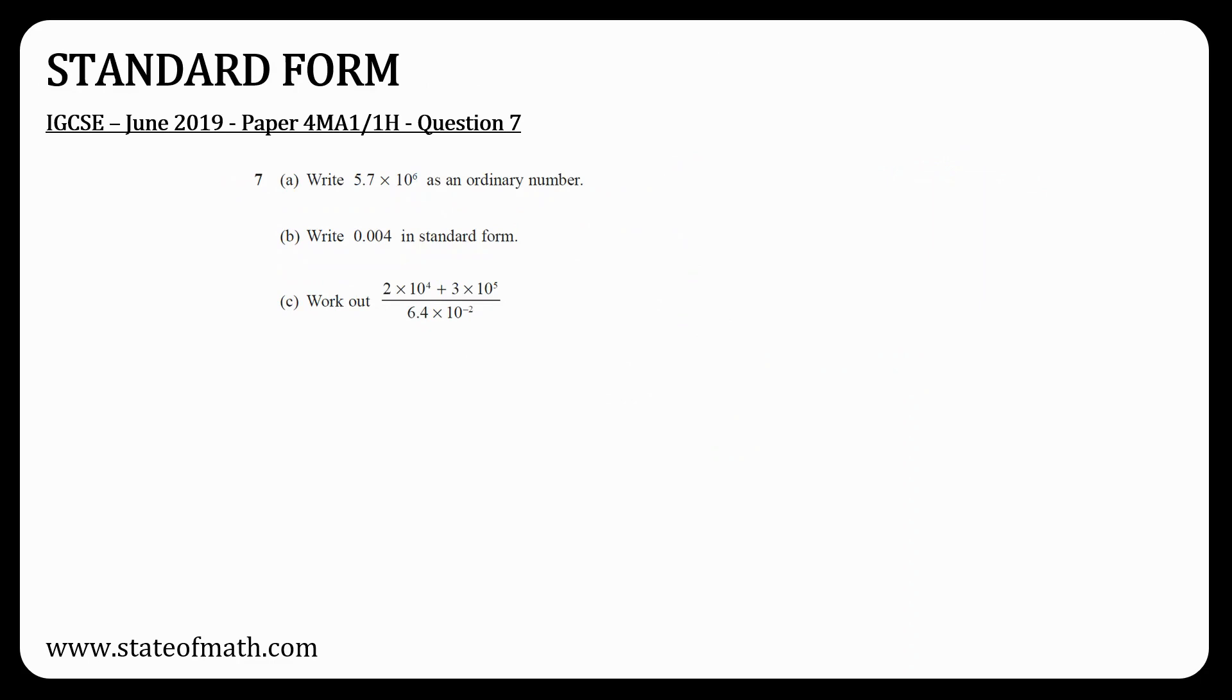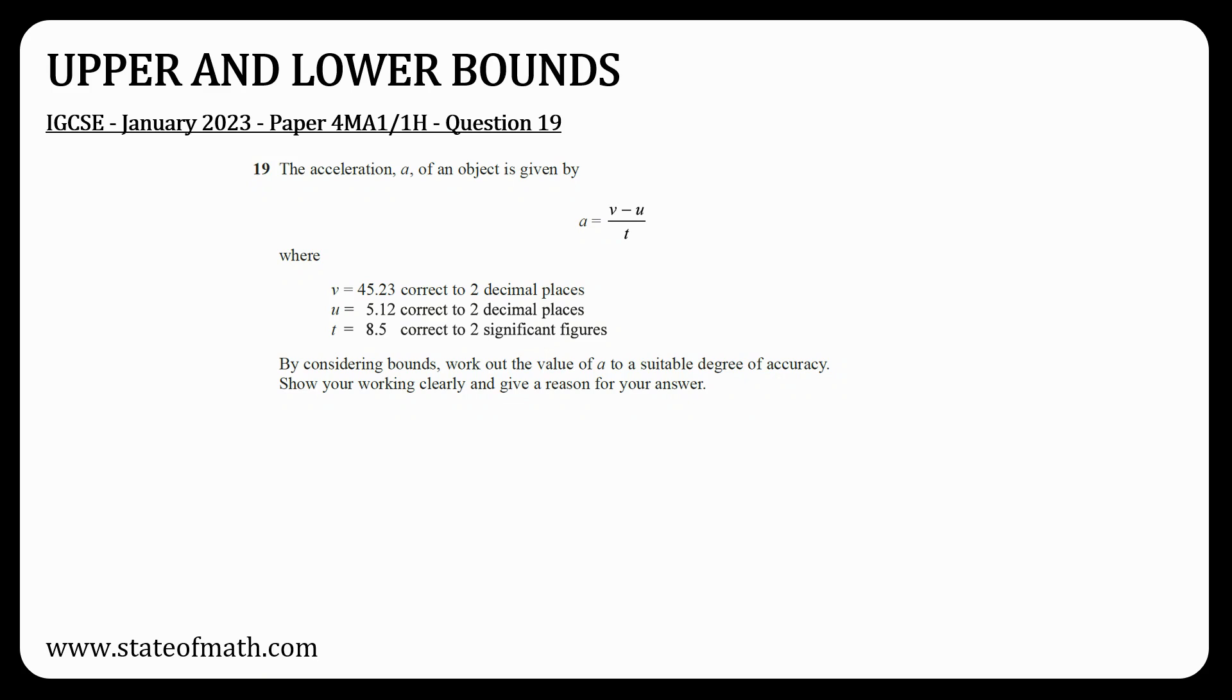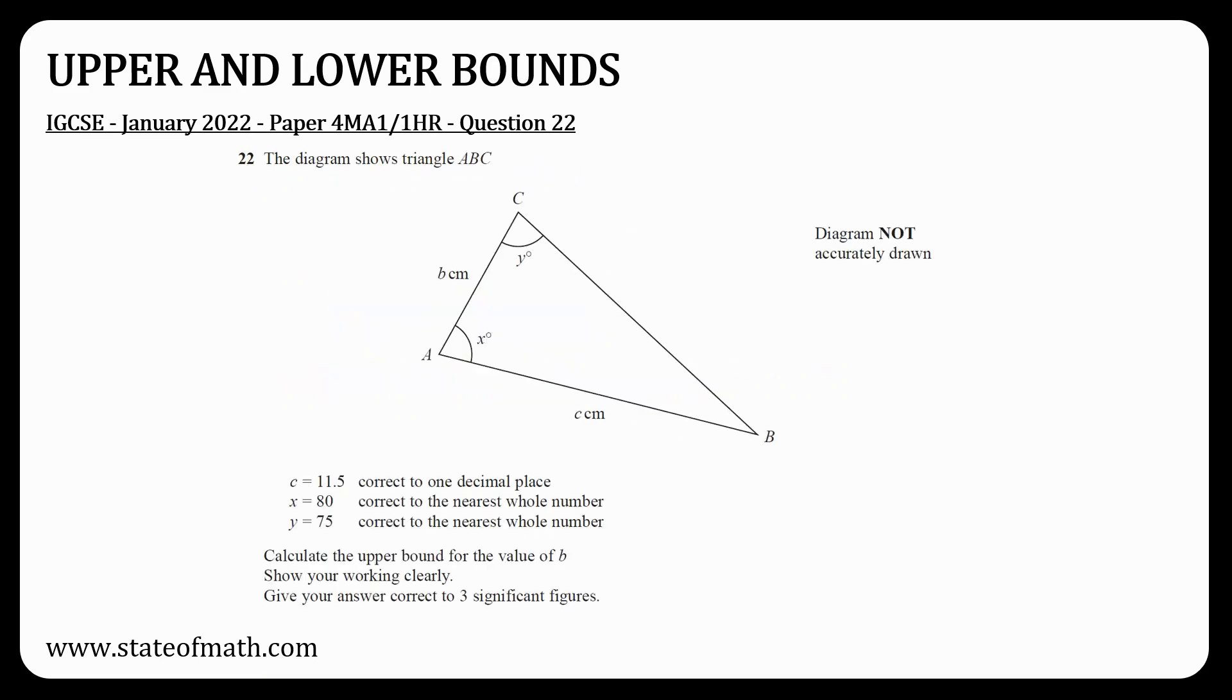Standard form is another topic that usually appears in the exams, so expect a question on this, either a simple one or a slightly more complicated one. Another topic that was missing from paper 1 was upper and lower bounds. In their simplest form, these questions involve a simple calculation, but there was a couple of papers where Excel decided to merge these with trigonometry like they did in January 2022.